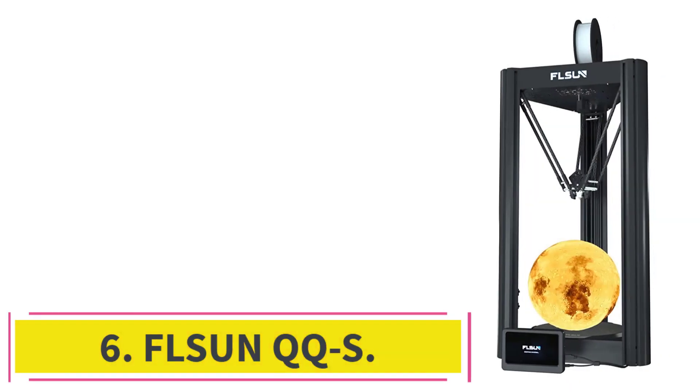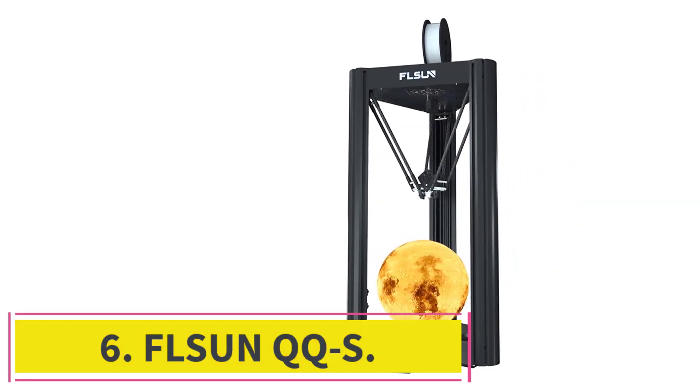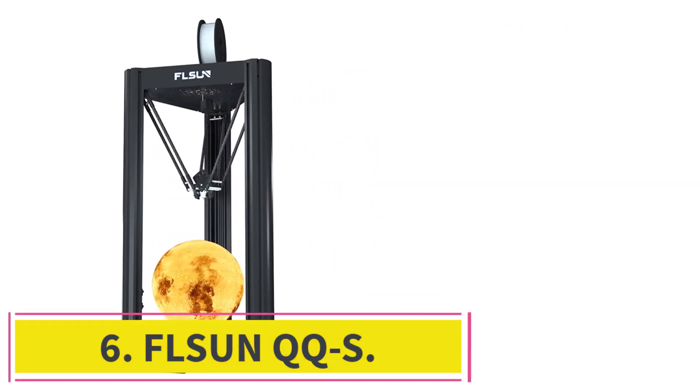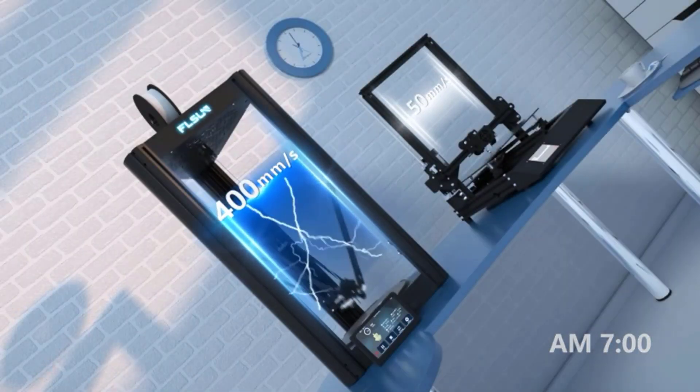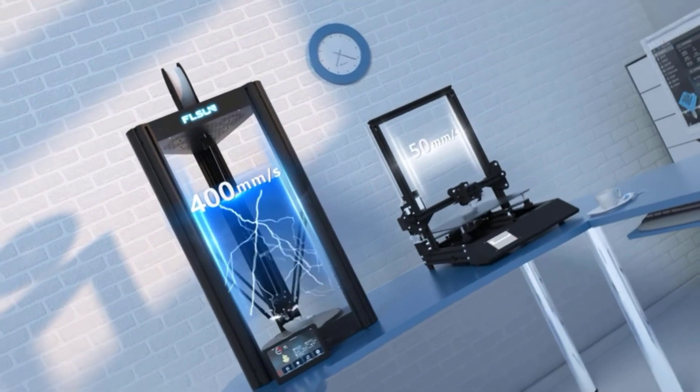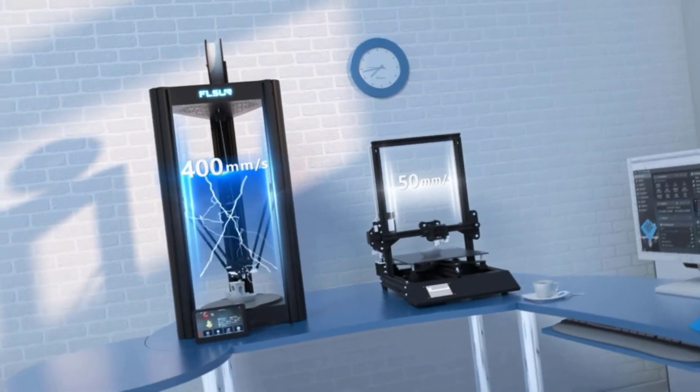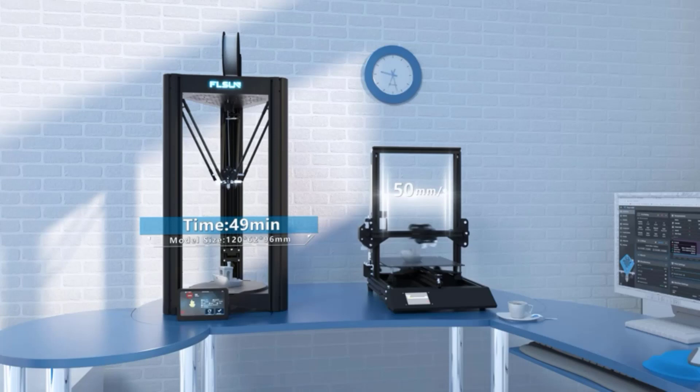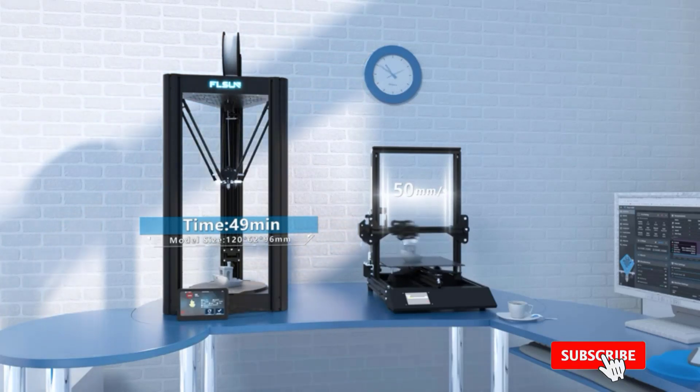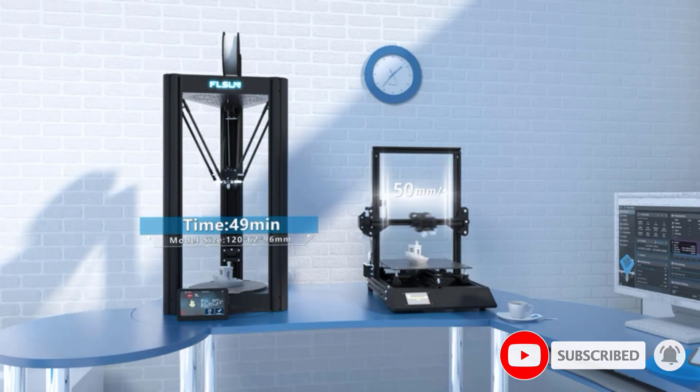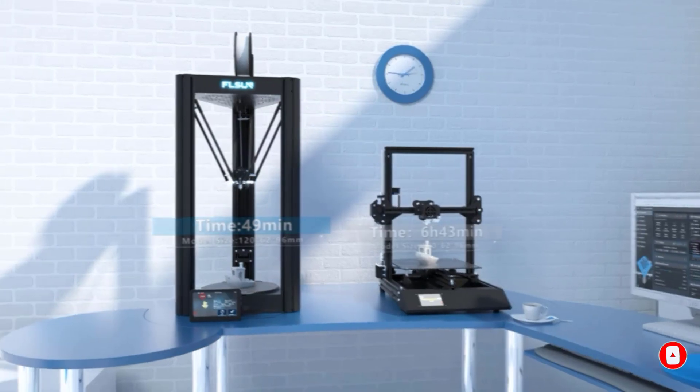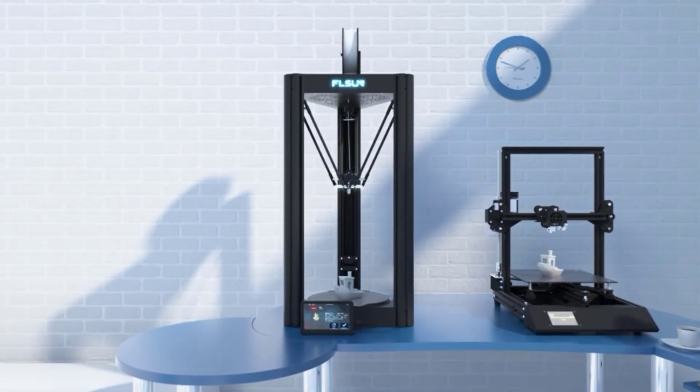At Number 6, Fulsun QQS. One of the best DIY Delta 3D printer machines out there, the Fulsun QQS features notable improvements on the original Fulsun QQ. It comes 90% assembled, so though technically still a 3D printer kit it will take under an hour to get up and running. We were lucky enough to test the FLSUN QQS; make sure to also check out our Fulsun QQS review.